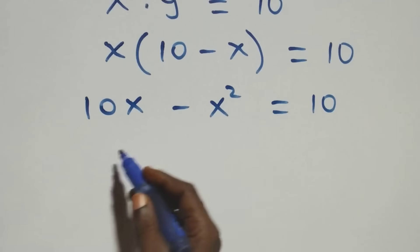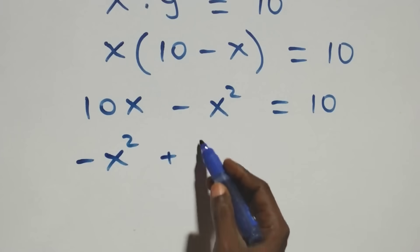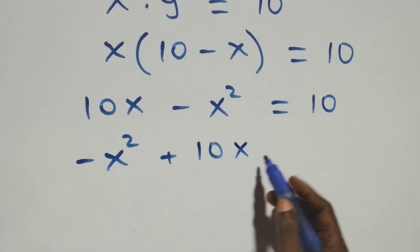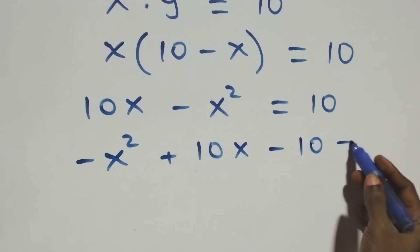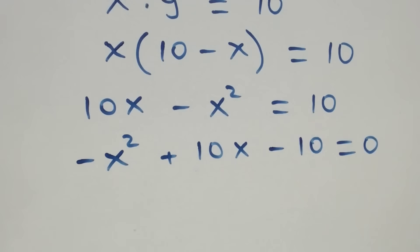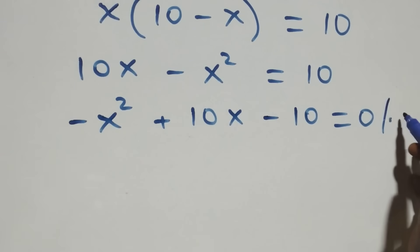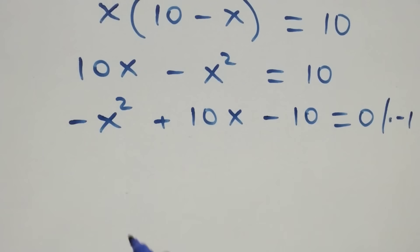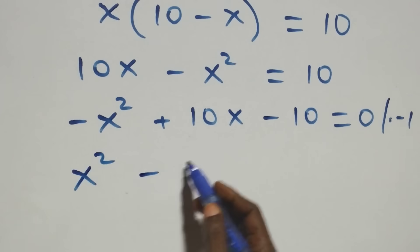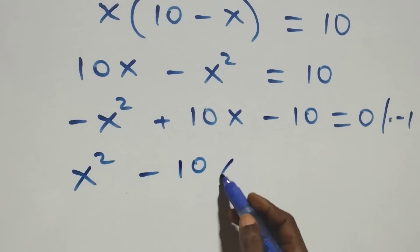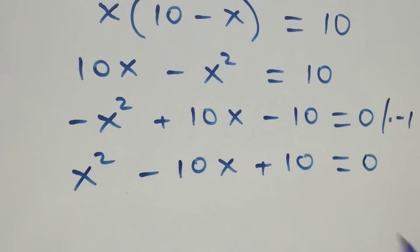We rearrange and get minus x squared plus ten x minus ten equals to zero. Then we multiply through by minus one, and this becomes x squared minus ten x plus ten equals to zero.